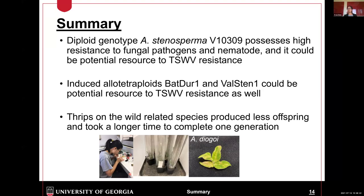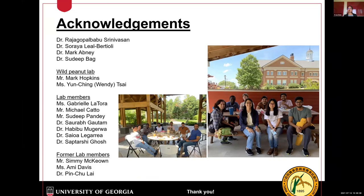In a short summary: the diploid genotype stenosperma has known high resistance to fungal pathogens and nematodes, and it could be a potential resource for TSWV resistance as well. The amphidiploid allotetraploids BELDO1 and MELSTEN could also be potential resources for TSWV resistance. I don't want to make a strong conclusion because we only have two replicates. For thrips resistance, we see that three wild-related species produce fewer offspring and take longer to complete one generation, implying the thrips resistance mechanism could be antibiosis. I want to thank my major advisor Babu Suleimaran, committee members Soraya Patioli, Dr. Mark Avani, and Dr. Steve Buck, and the wild peanut lab and my lab members. Thank you.